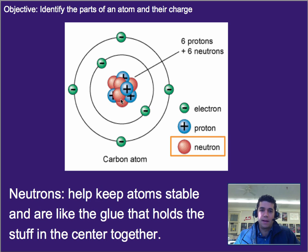Now, neutrons help keep atoms stable. That is, they kind of work like the glue inside the nucleus, and they prevent the nucleus from repelling itself or pushing itself apart. So the neutrons help keep things together.